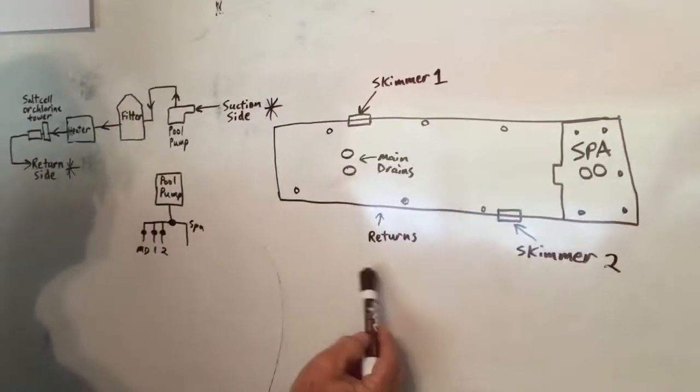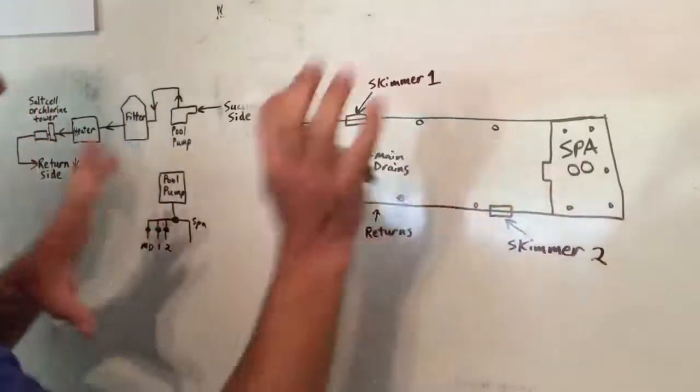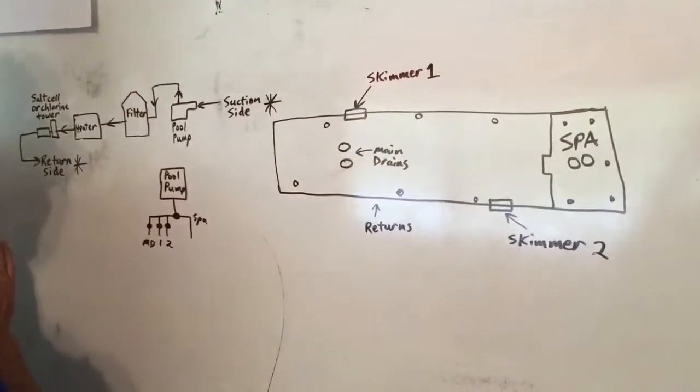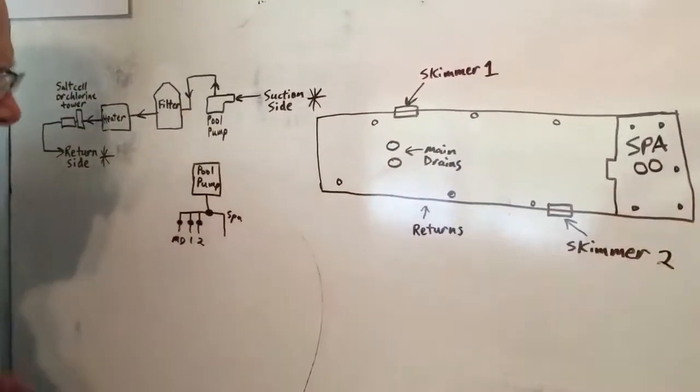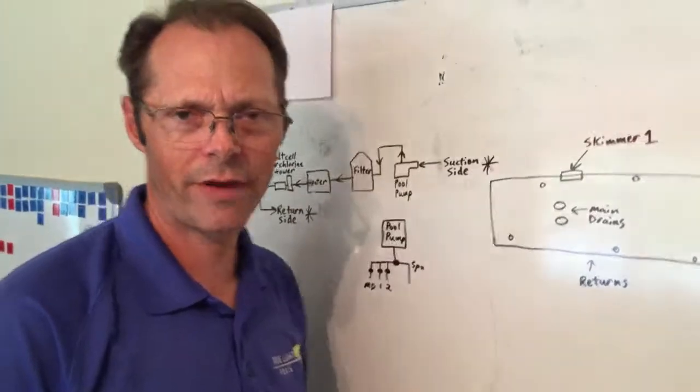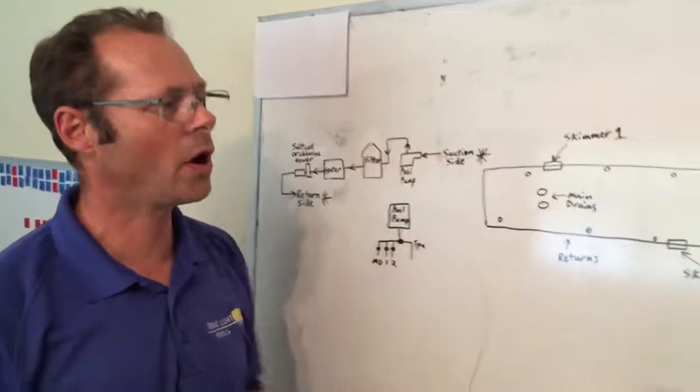This right here, normal operations in pool mode, spa mode. When you think spa mode, everything pool's cut off. I'm only pulling from the spa and then returning to the spa. So that's the basic operation of how a pool works and how a spa works.